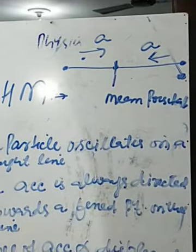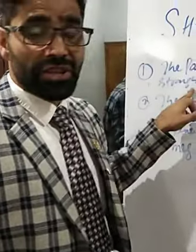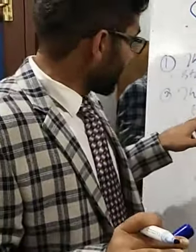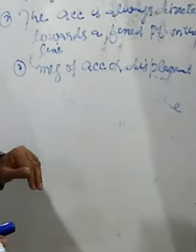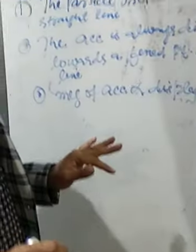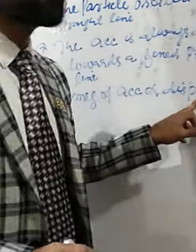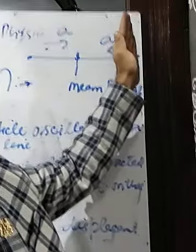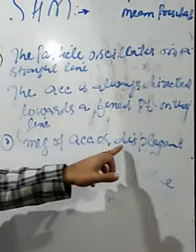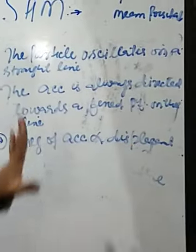In case of simple harmonic motion, the particle oscillates on a straight line. The second condition is the acceleration is always directed towards a fixed point on the line. The third point, which is very important, is that the magnitude of acceleration is directly proportional to displacement — as displacement increases, acceleration also increases.